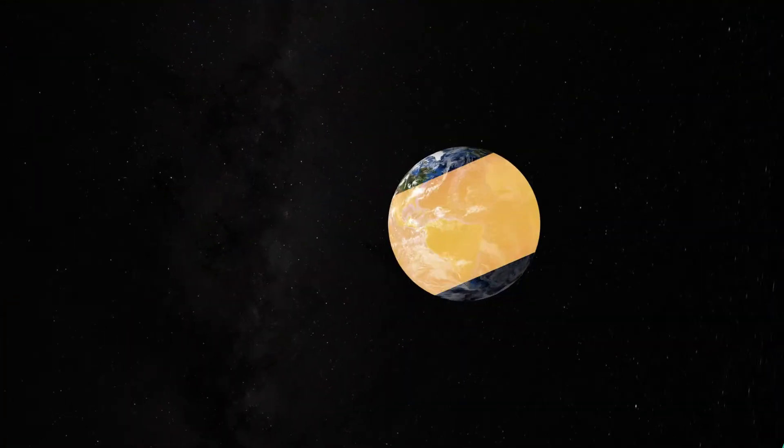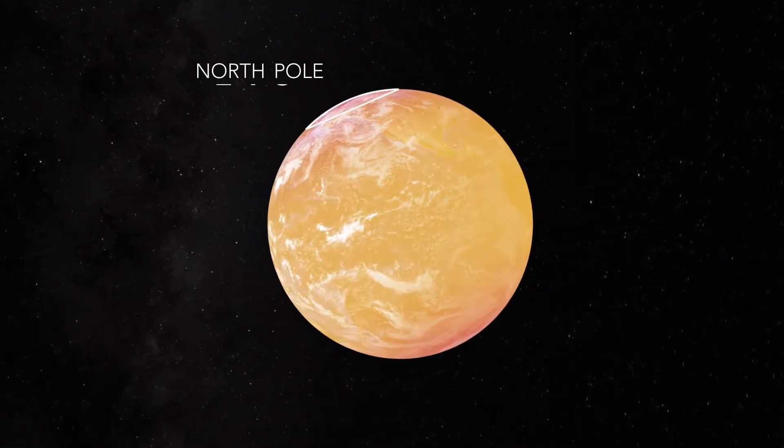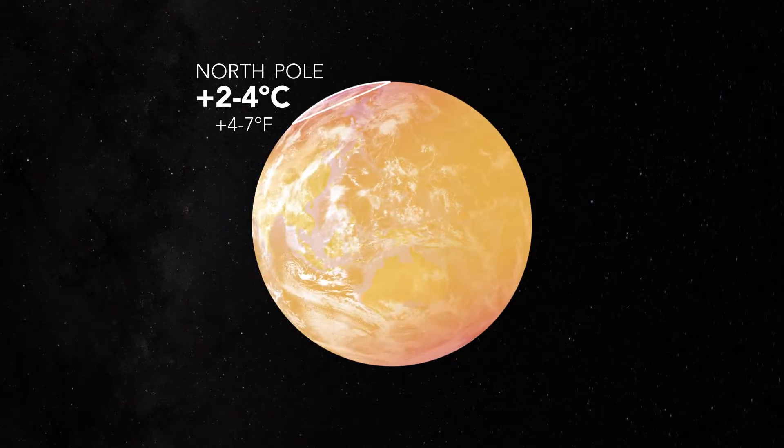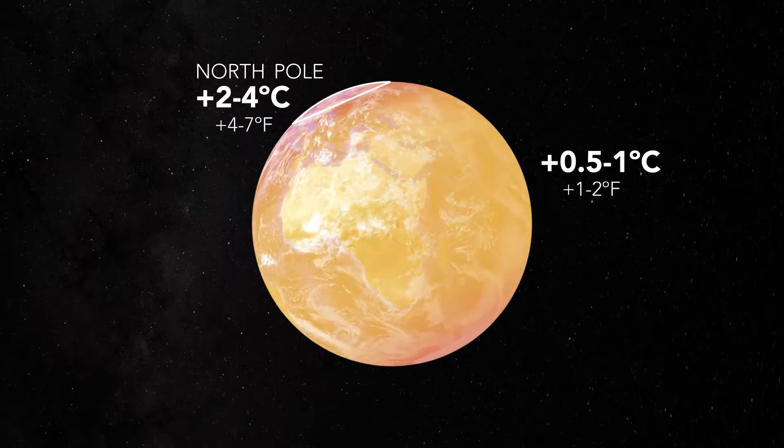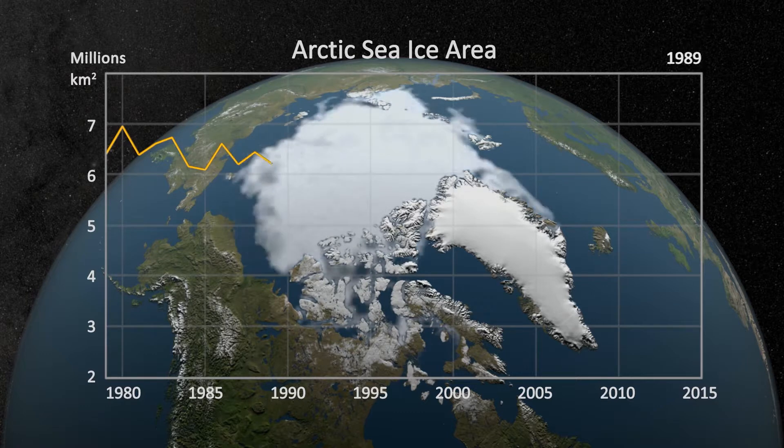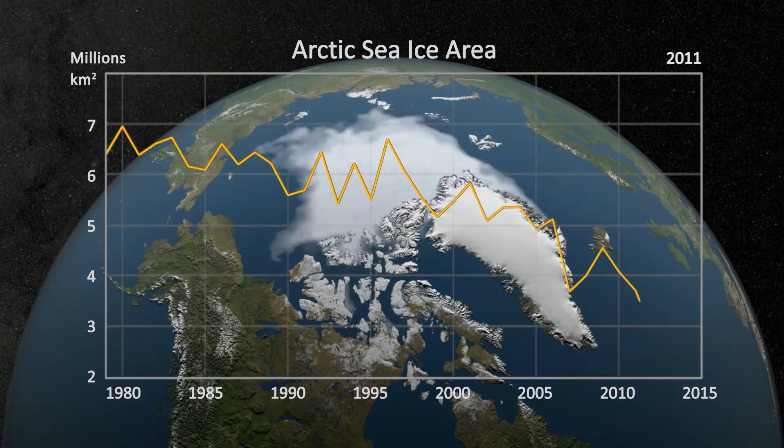Notice that temperatures have warmed more over the Arctic sea ice regions, about 2 to 4 degrees Celsius or about 4 to 7 degrees Fahrenheit, in comparison to elsewhere across the globe where it's about 0.5 to 1 degrees Celsius or 1 to 2 degrees Fahrenheit. This animation from NASA illustrates the accelerating loss in Arctic sea ice that is occurring primarily from this feedback loop.